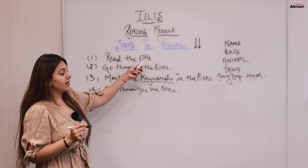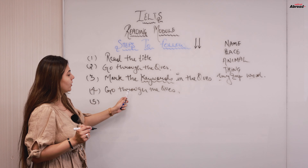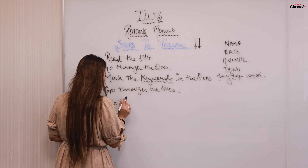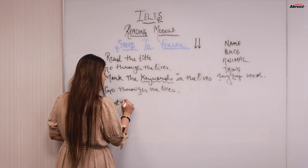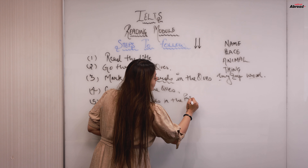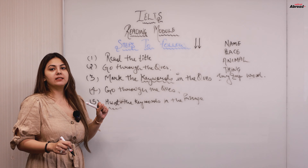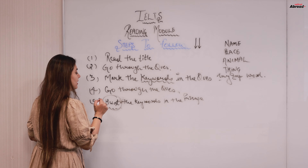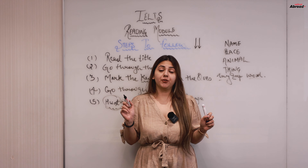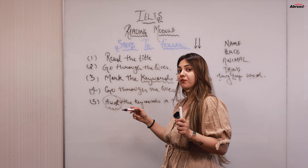Step number five: we have read the title, gone through the questions, and marked the keywords. Now what we are required to do is hunt the keywords in the passage. I use the word 'hunt' because it means I will not read everything line by line or word by word. I will stop at the keyword and come to the very next step.